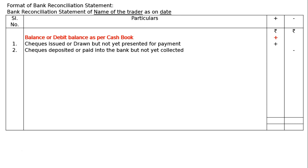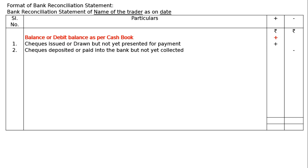The second item is checks deposited or paid into the bank but not yet collected. Once we deposit a check, we increase the cash book balance. However, the bank could not collect payment on the deposited check, so we have to deduct this amount from the cash book balance to find the balance as per pass book.